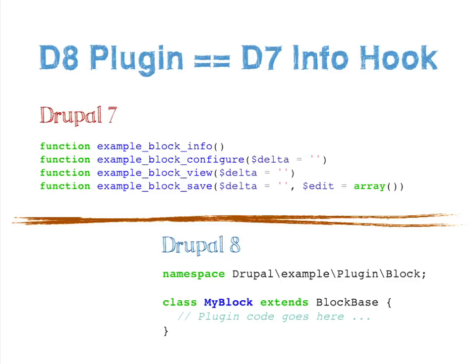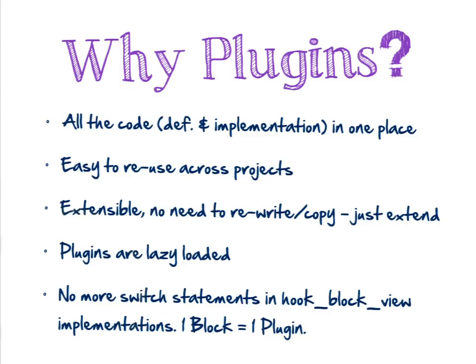Plugins accomplish the same thing, just using a slightly different pattern. We're using object-oriented programming, so we've got classes. The discoverability happens because Drupal knows to find the class that is the representation of this block. Once it's found it, it can call the get_title method or the get_content method — which is akin to calling hook_block_view in Drupal 7. This was already done in Drupal 7 with info hooks, but there were ways to improve it and make the whole system a little bit easier to understand.